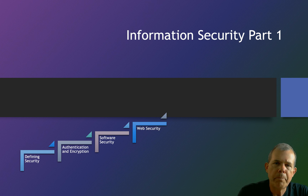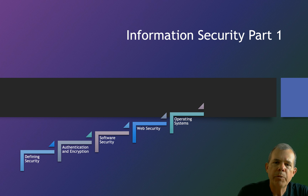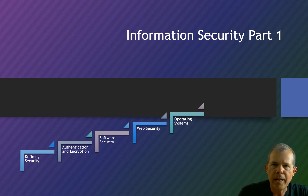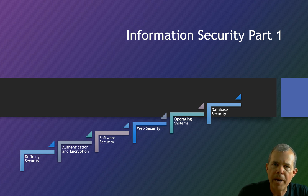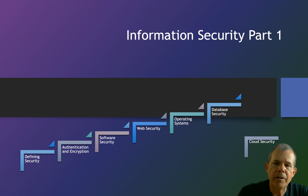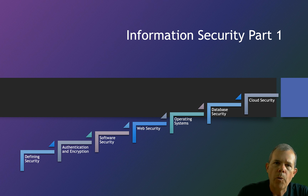We'll talk about web security, and we'll build an app that will teach us all the principles we should know about building a secure web app. Then we'll talk about operating systems — things that would design an operating system to protect the memory and to avoid having rootkits or other invasions in your levels of security. We'll focus in on database security and cloud security, taking our web app and moving it to an Azure web instance, and we'll talk about the issues that arise as soon as you move to a cloud.